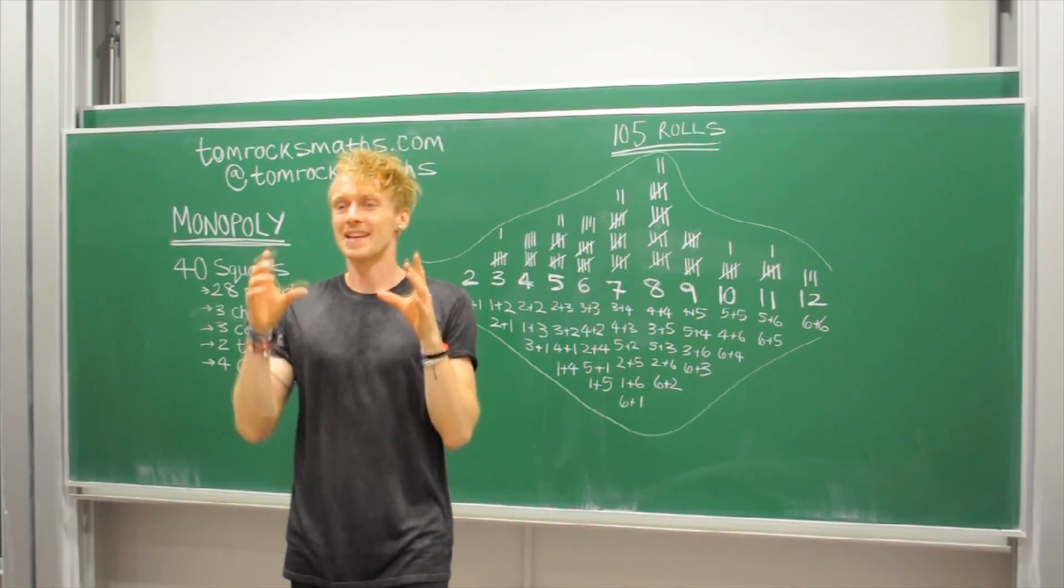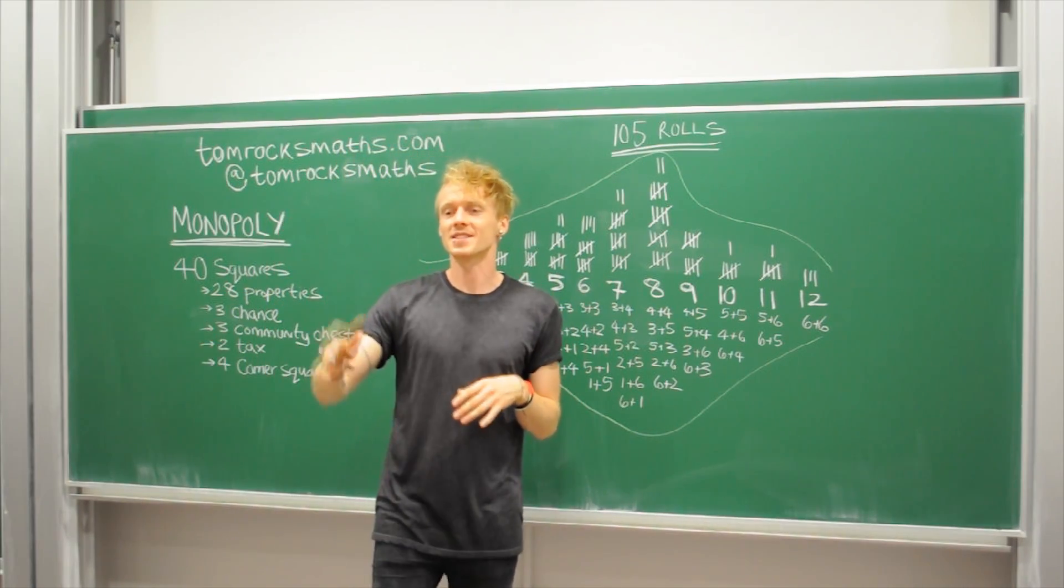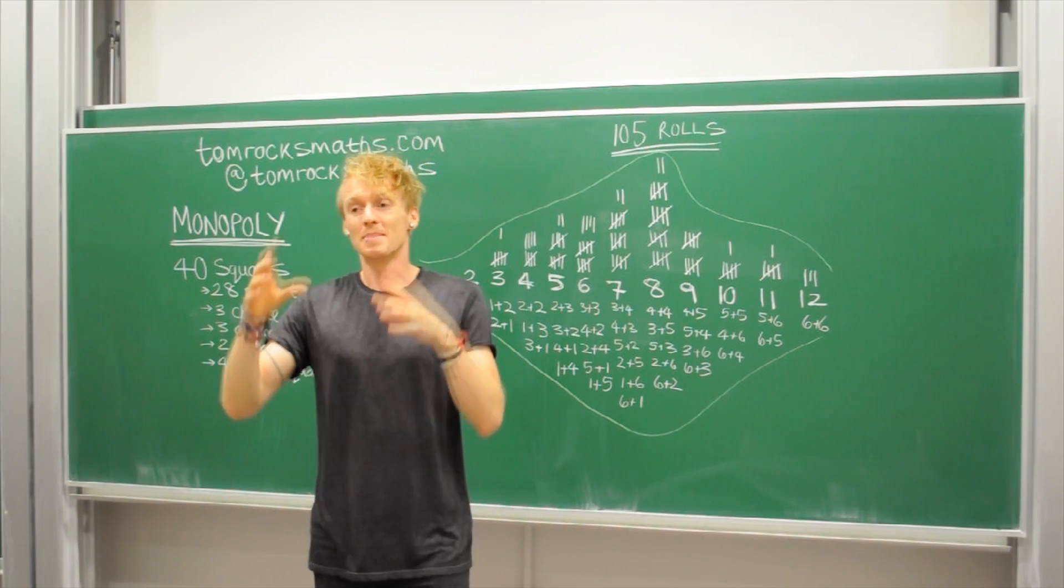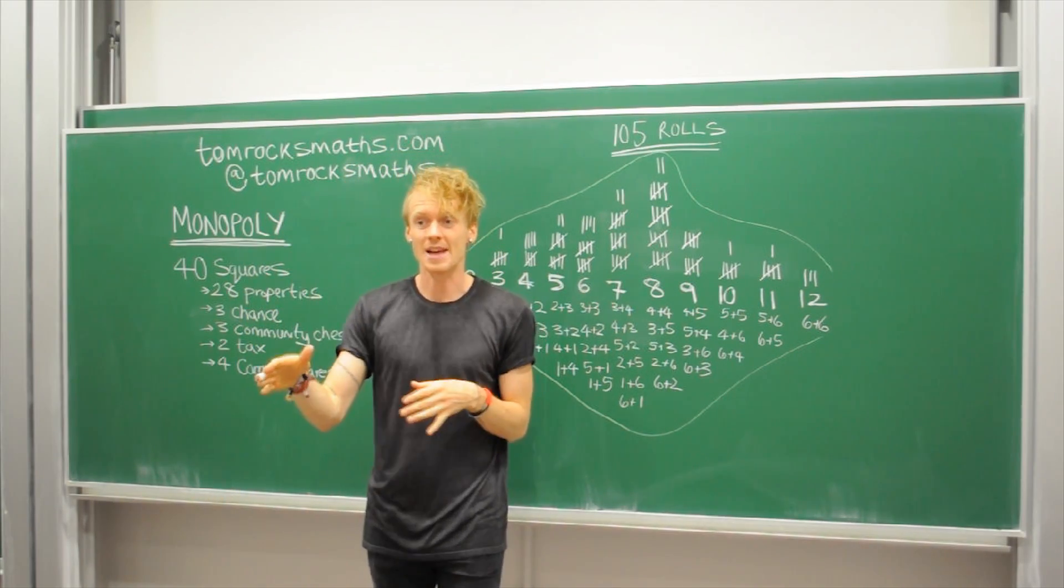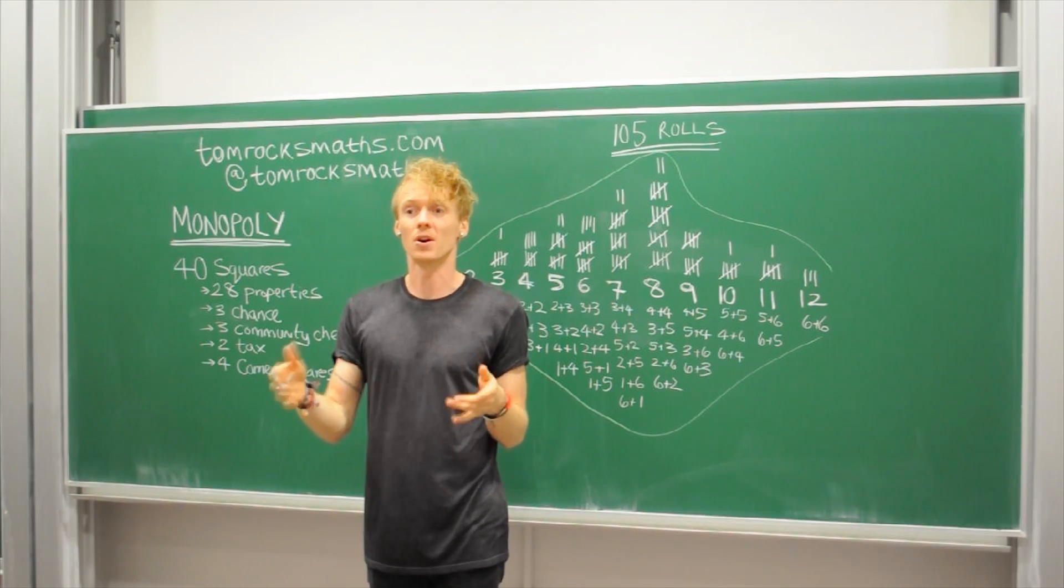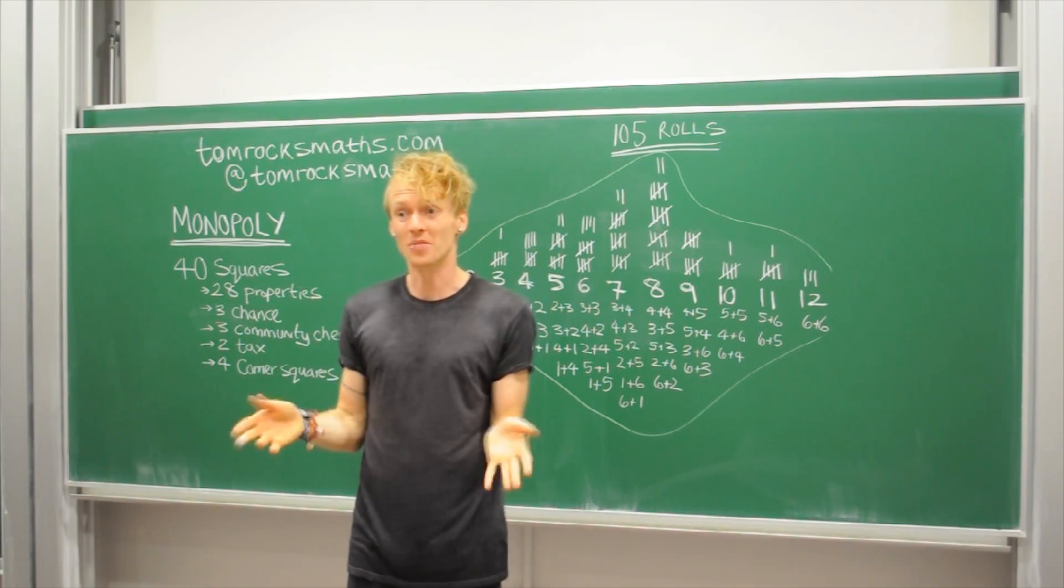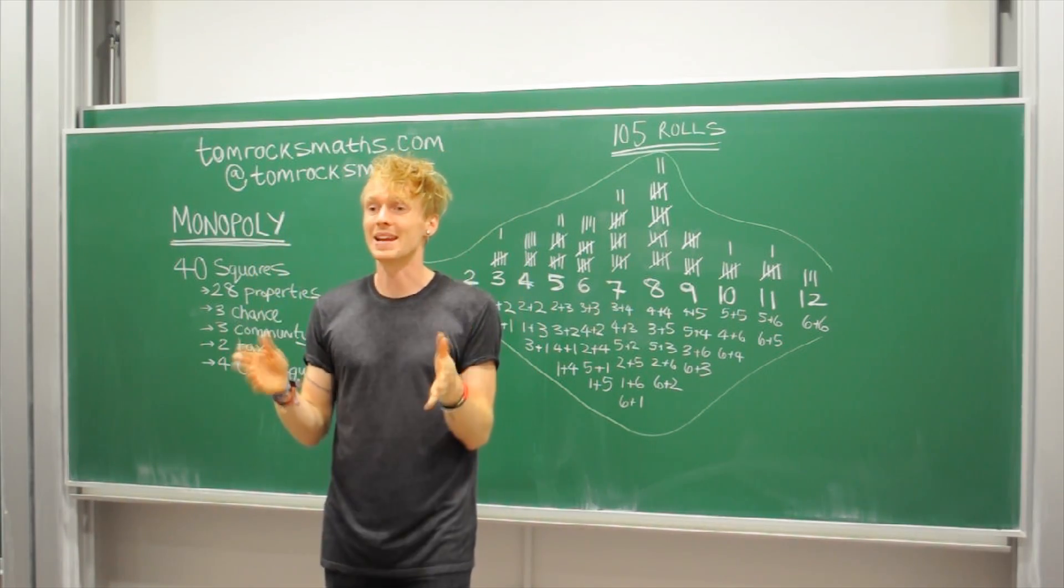So next time you play Monopoly buy those oranges. It's all about the orange properties. Buy all three. Get the houses down. Get the hotels down. Because people are most likely to land on those squares. And so if you own them you're going to be the one taking their money and you're going to hopefully maximize your chance of winning the game.